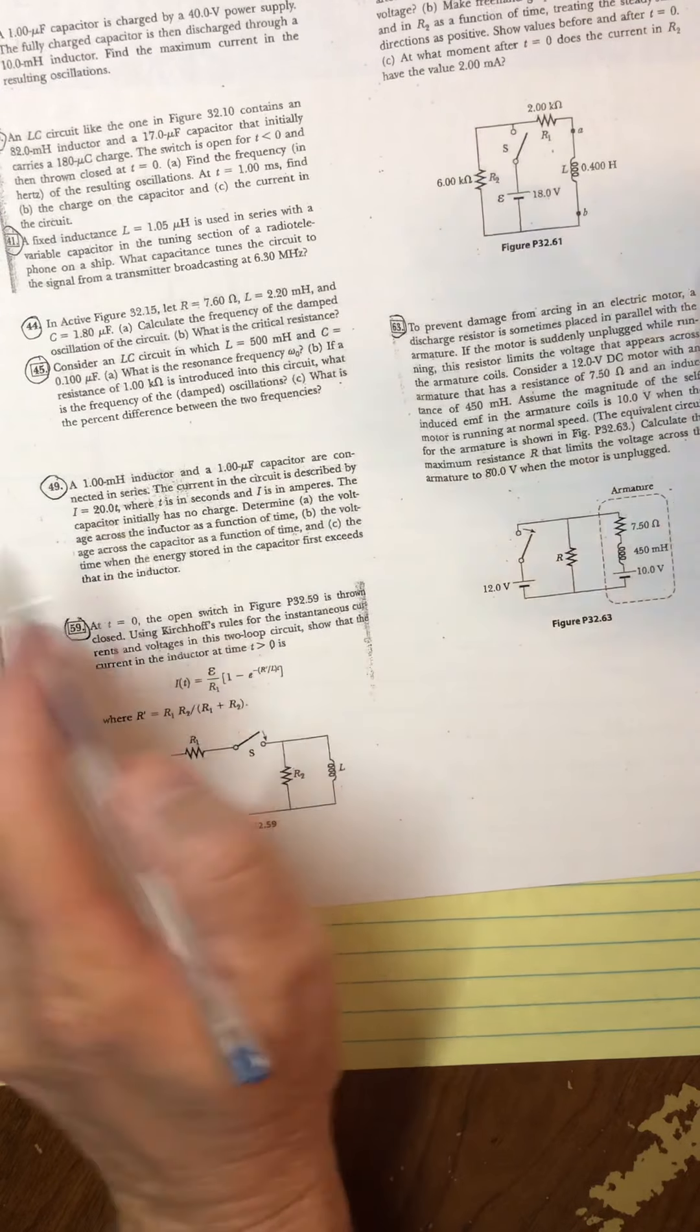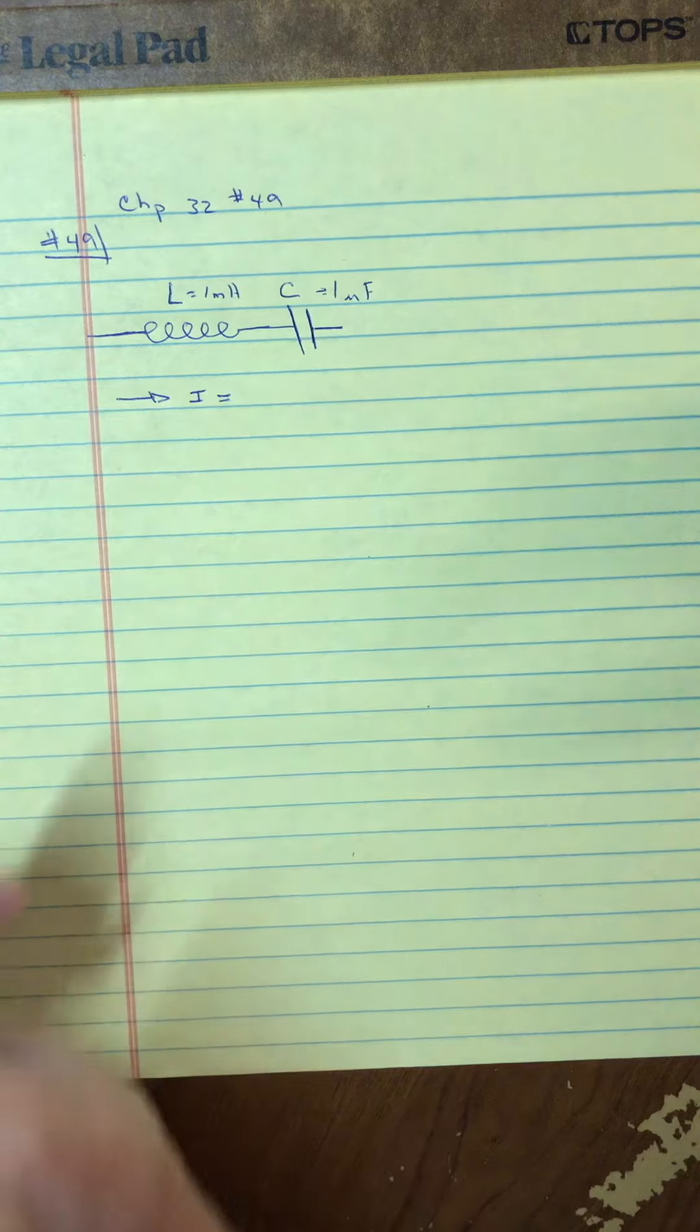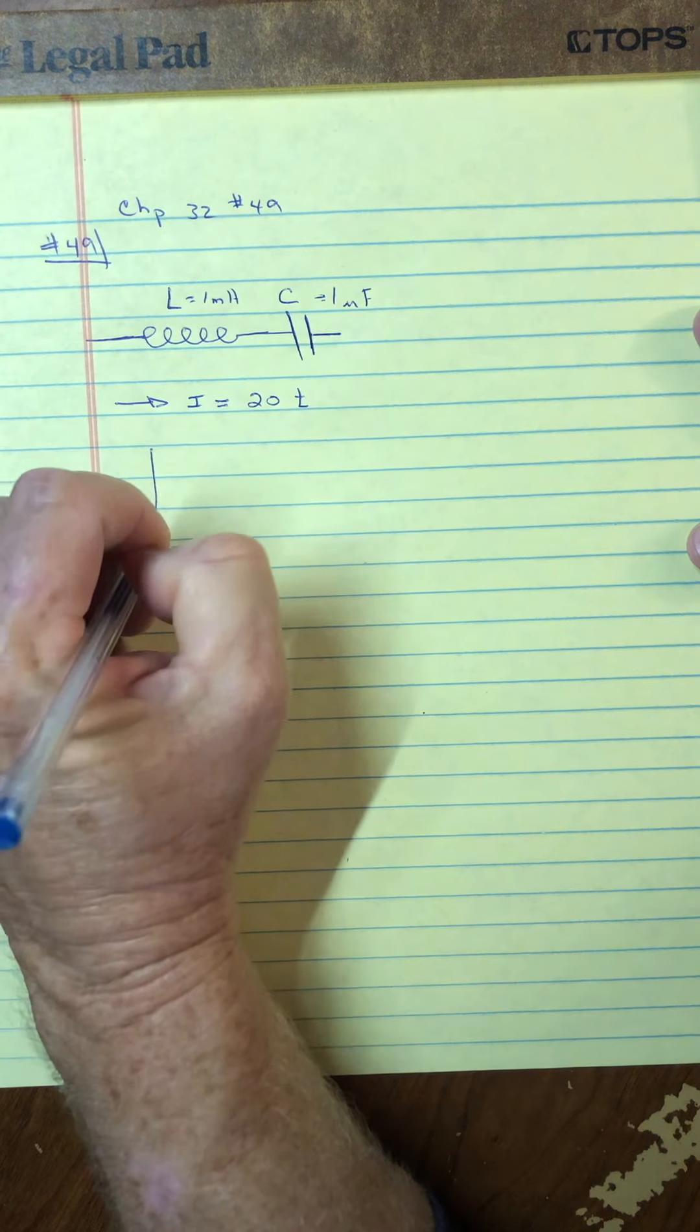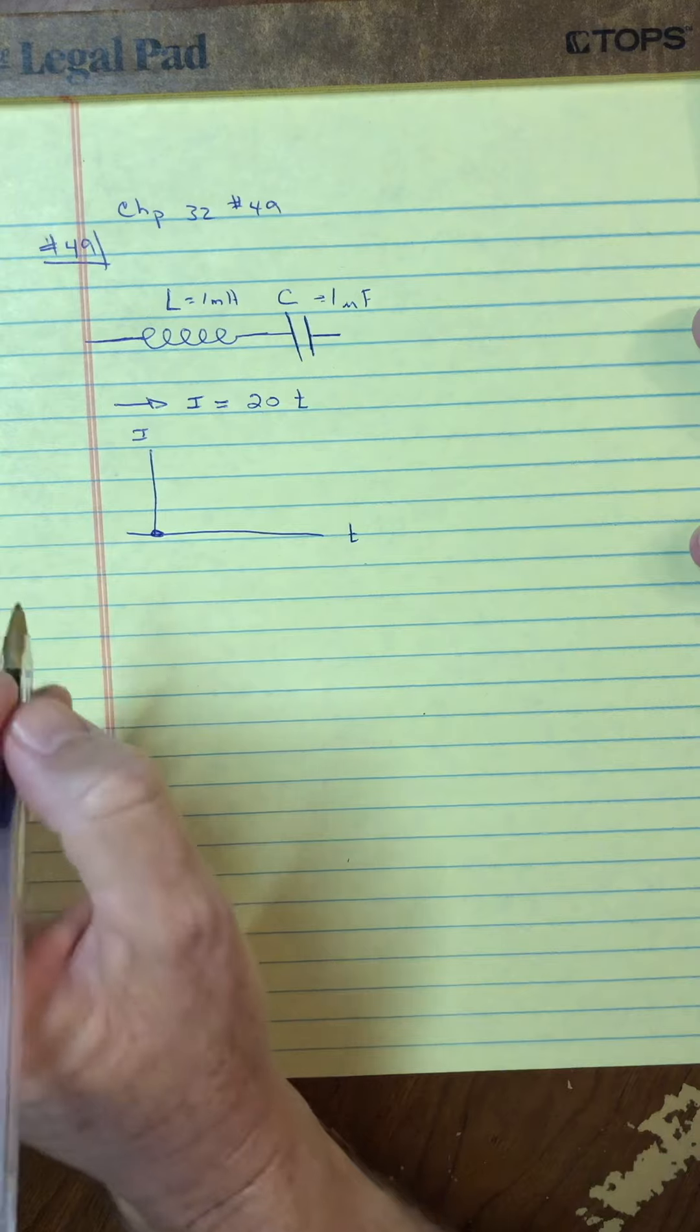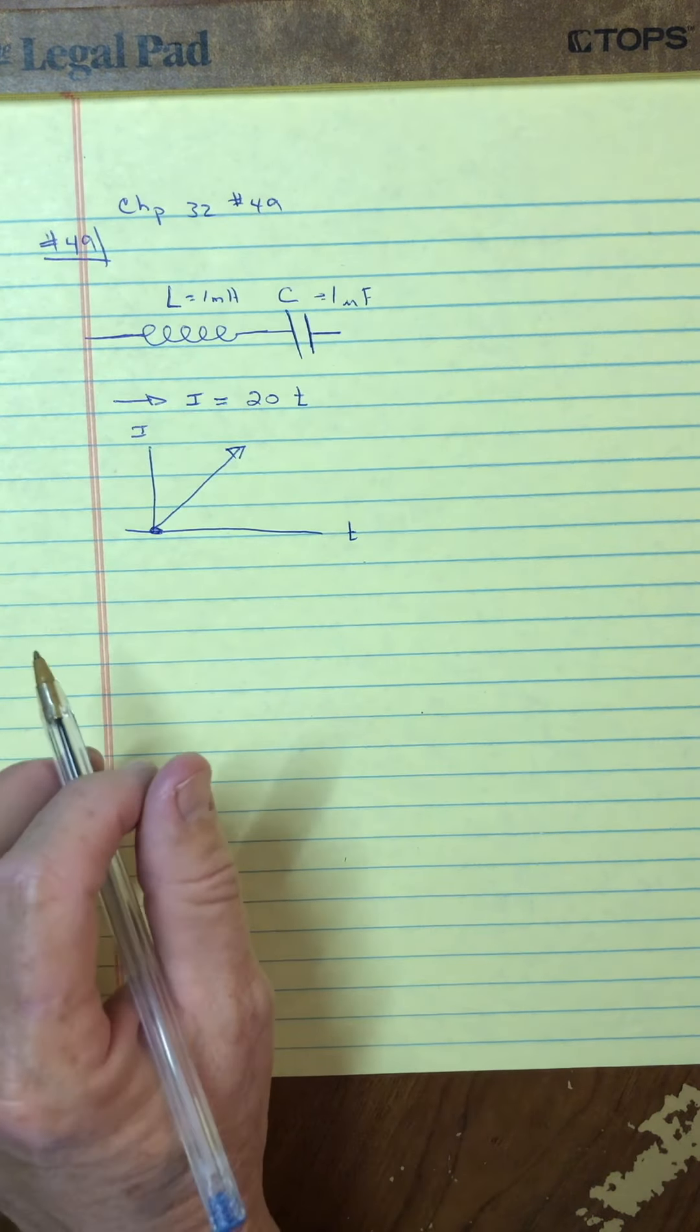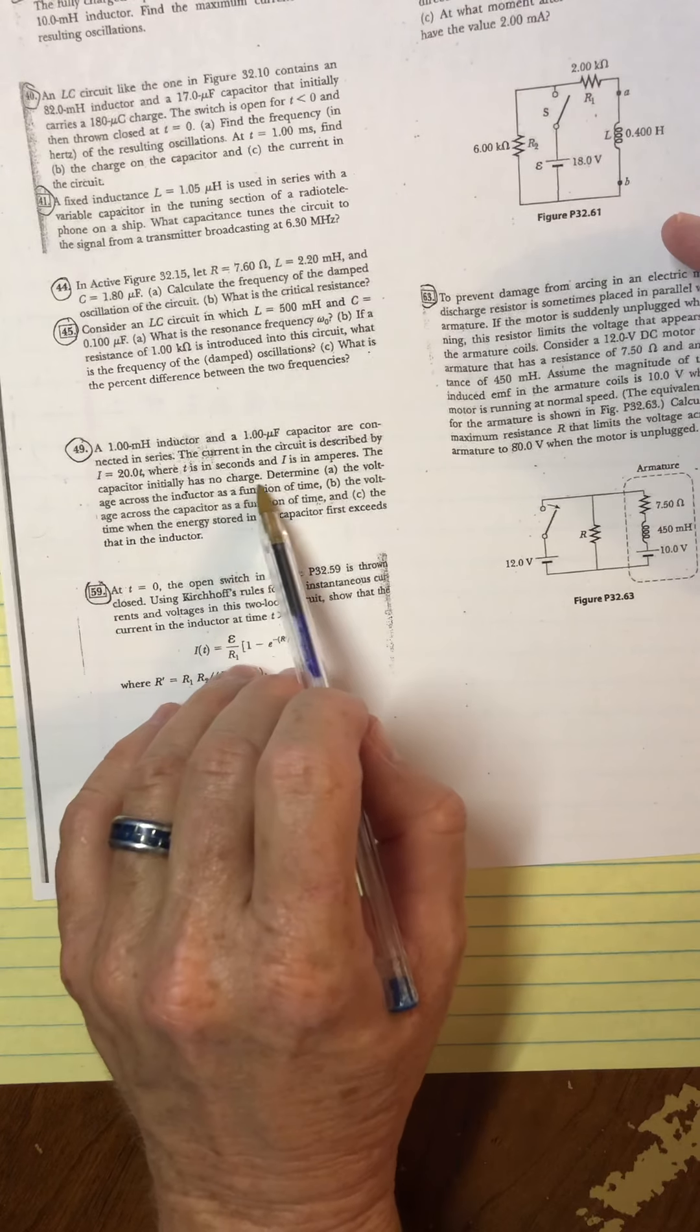The current in the circuit is described by... And so I'll just say the current is heading this way. Don't really know which direction, although they're in series, so it doesn't matter. But they say it is 20 multiplied by T. So the current is increasing linearly as a function of time. So at time equals zero, there's no current. And then it has a slope of 20. And we don't really know the rest of the circuit. T is in seconds and the current is in amps. The capacitor initially has no charge.